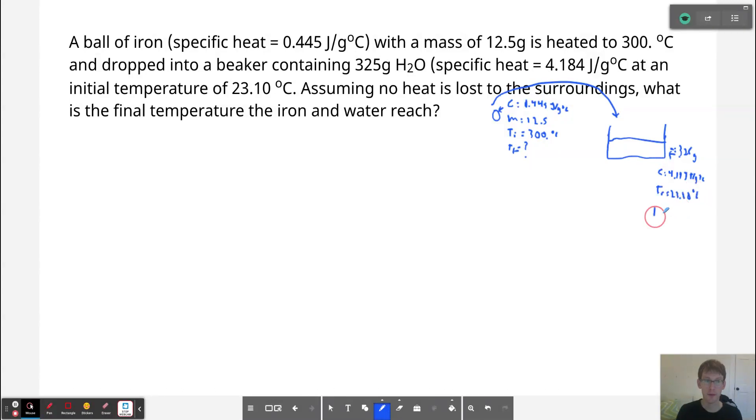And our final temperature is unknown. So we need to solve this problem. We know that the relationship is that Q in is equal to negative Q out. And let's think about this. What is gaining energy? Well, that's going to be the thing with Q in. That's going to be the water. The water is going to heat up. And the negative Q out, that's going to be for the ball of iron because it's losing heat because it's hot to begin with. So what we can do is we can say that m·c·(Tf - Ti) for the water is equal to negative m·c·(Tf - Ti) for the iron.